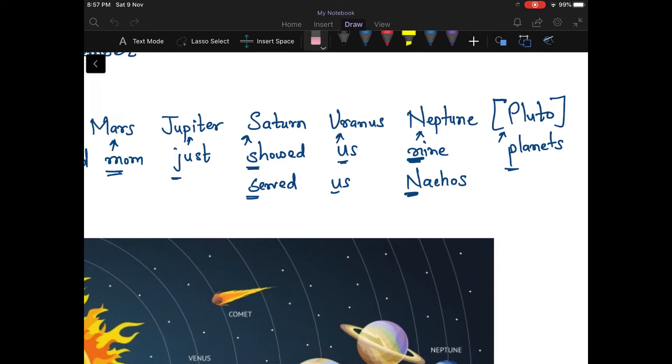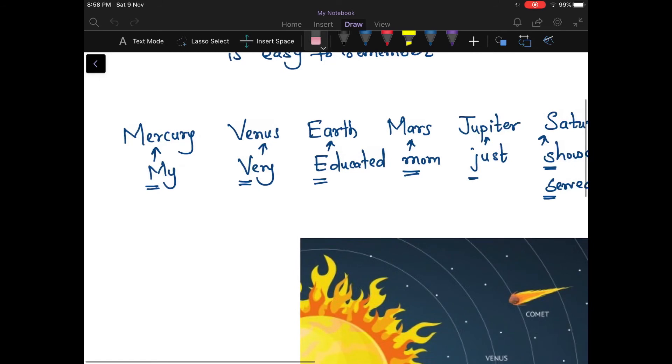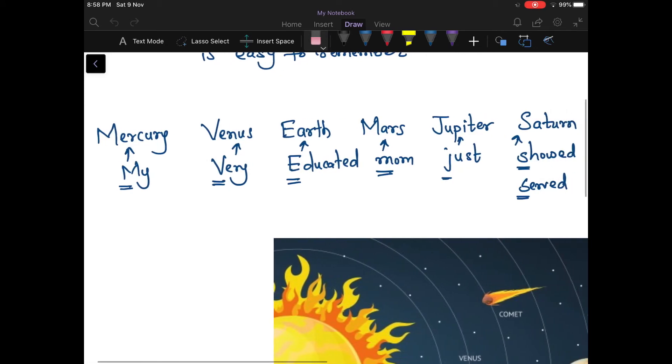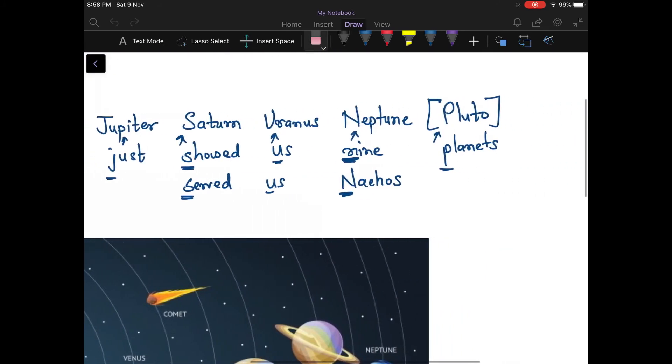If you want to remember nine planets, you can use a slightly different phrase: 'My very educated mom just showed us nine planets.' In this sentence, P in 'planet' stands for Pluto.